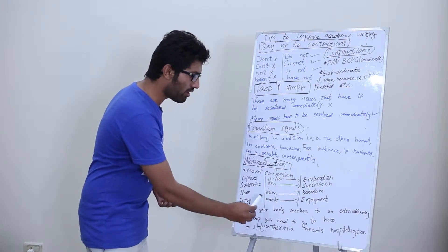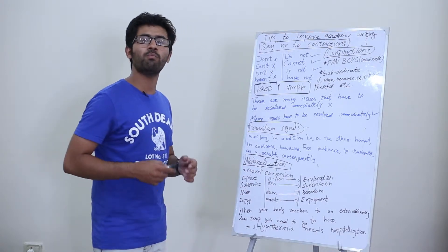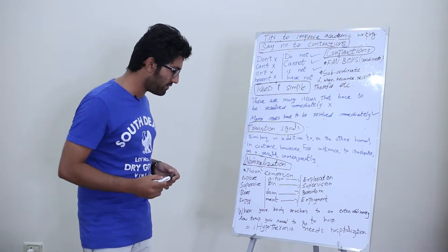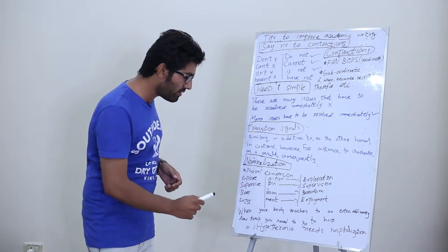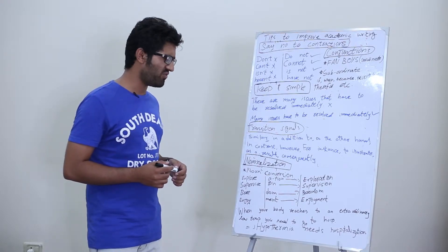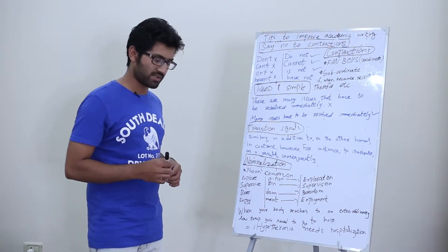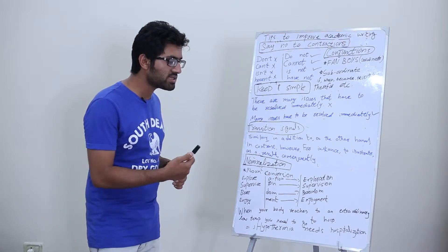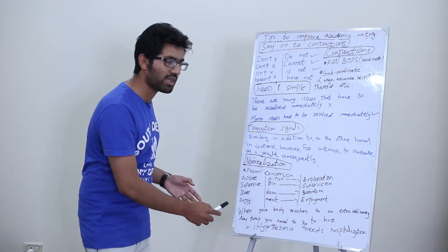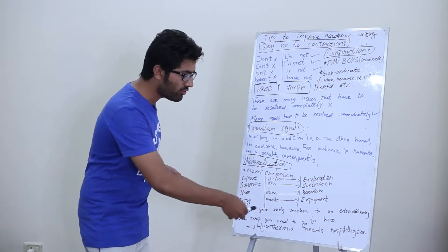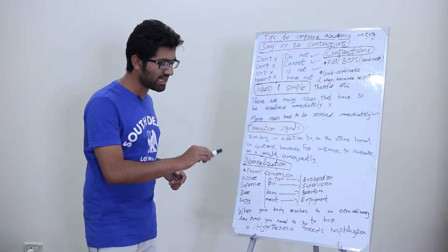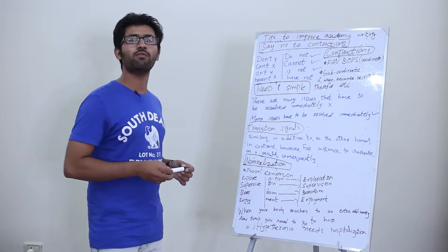Here is an example: when your body reaches an extraordinary low temperature, you need to go to hospital. Don't you think it's a complicated sentence, a very irritating and long one? You can change it with the help of nominalization: hypothermia needs hospitalization. When your body reaches an extraordinary low temperature, this whole phrase is converted with the help of hypothermia. And 'you need to go to hospital' can be changed into hospitalization. This is the use of nominalization. Always focus on where you can change your words into noun form.